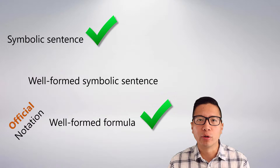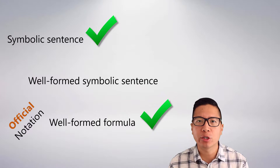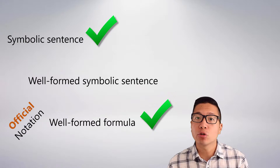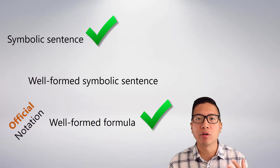In our previous video, we introduced ourselves to the syntax of sentential logic, and beyond just learning what letters and connectives we're allowed to use, we learned official notation. Official notation is important because it generates well-formed formulas in sentential logic, and well-formed formulas are meaningful sentences that we can confer and figure out truth and falsity on. This is important because it will allow us eventually to figure out validity of arguments.